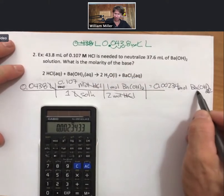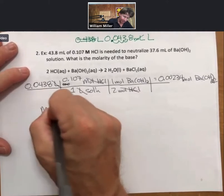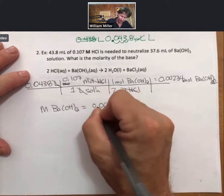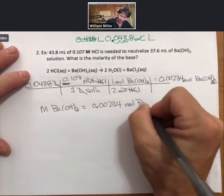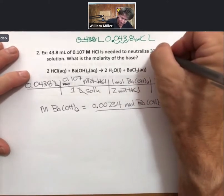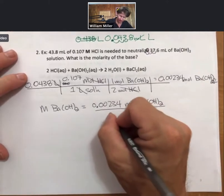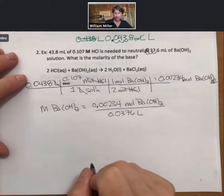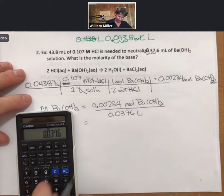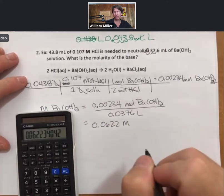And now I have moles of barium hydroxide and I have milliliters which I can convert into liters. And so I can put those two together. So molarity of barium hydroxide is going to equal moles of barium hydroxide over liters of solution. Or again, I will have to convert that to liters. 0.0376 liters. And then I multiply this out. I'm going to go back to 0.00234 divided by 0.0376. 0.0622 molarity barium hydroxide.